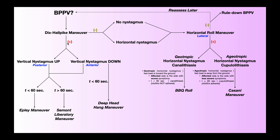A positive Dix-Hall-Pike maneuver is the reproduction of vertical nystagmus, but whether that nystagmus is upbeating or downbeating determines which of the semicircular canals is implicated. If the vertical nystagmus is upbeating, then there's likely an issue with the posterior semicircular canal. If the vertical nystagmus is downbeating, then there's likely an issue with the anterior semicircular canal. Issues with the posterior canal are much more common. A memory aid: the P in 'up' is for the P in posterior.